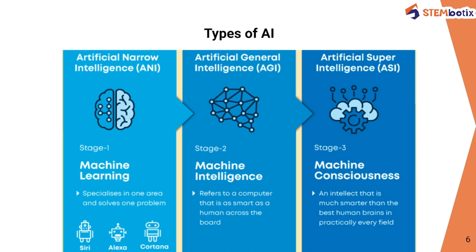The second type is Artificial General Intelligence, Stage 2, which refers to a computer that is as smart as a human across the board — with human-level intelligence. The third type is Artificial Super Intelligence, Stage 3, referred to as machine consciousness — an intellect that is much smarter than the best human brains in practically every field, which can be considered the replacement of a human being.